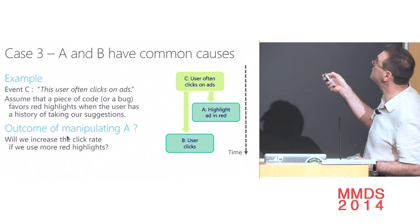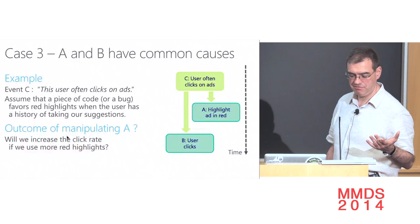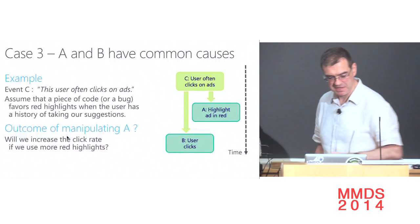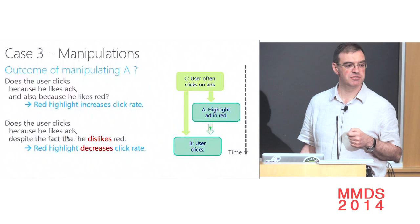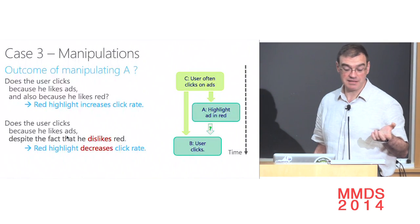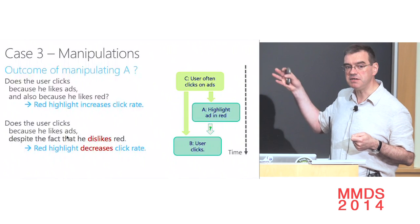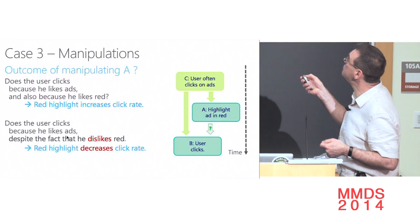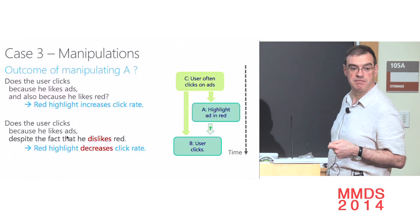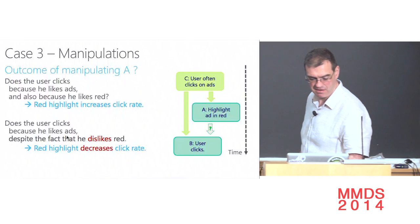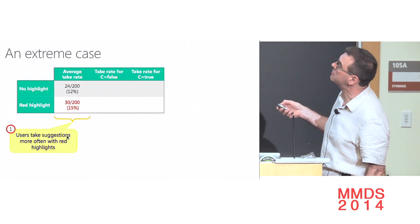You see a correlation between red highlights and clicks, but what caused it is the user's propensity to click. The question is: will we increase the click rate by using more red highlights? There are two cases: maybe the user clicks because they like ads AND because they like red, so more red means more clicks. Or maybe the user clicks despite disliking red, so more red means fewer clicks. It's 50/50. I observe a positive correlation between these two events, but the real causation could go either way.